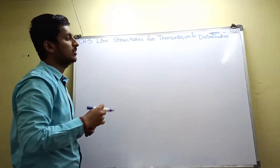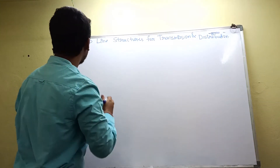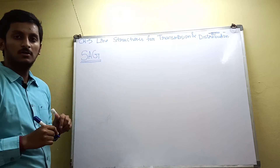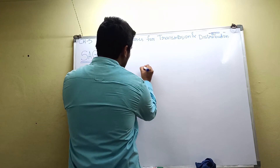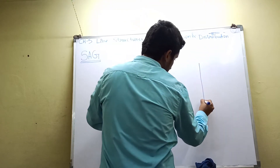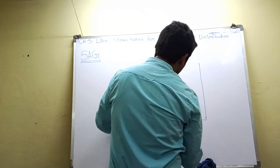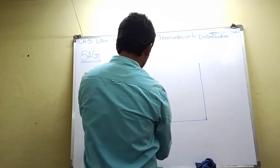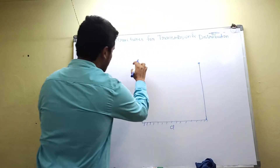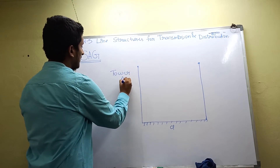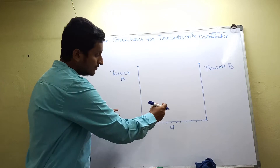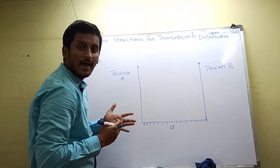Before going to the chapter, I would like to explain the concept of sag. To understand sag, we consider two towers separated by a distance d. The length of separation between the two towers is called the span length. I am naming the towers as Tower A and Tower B.